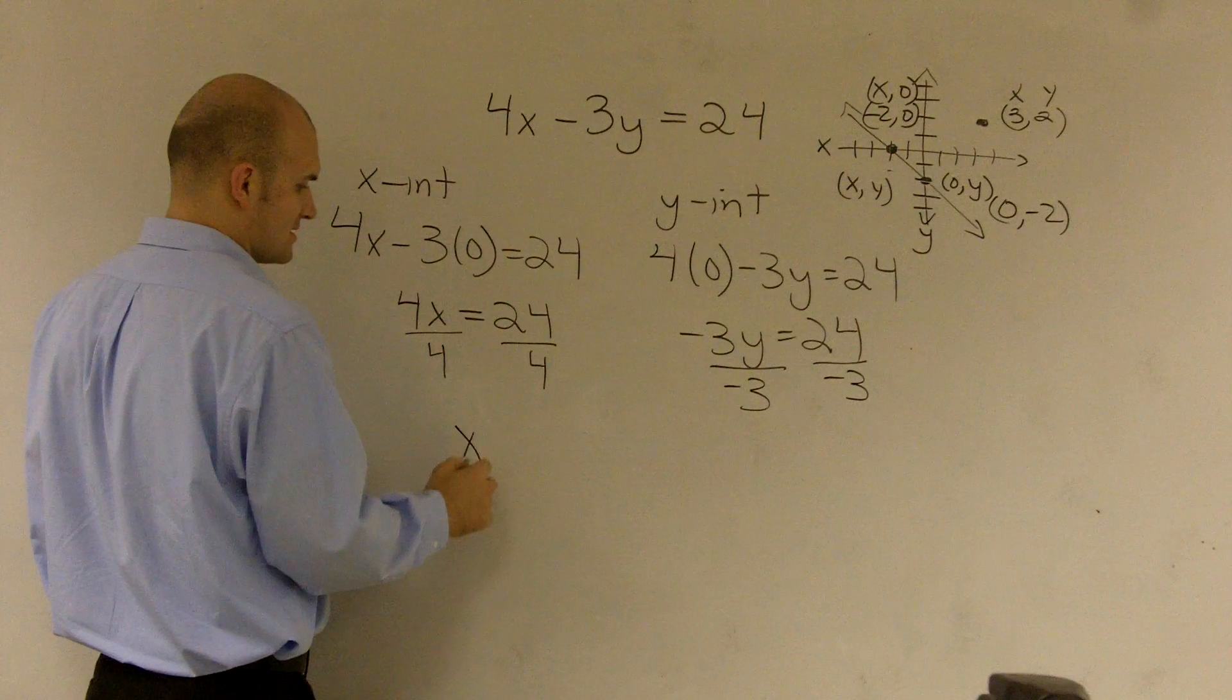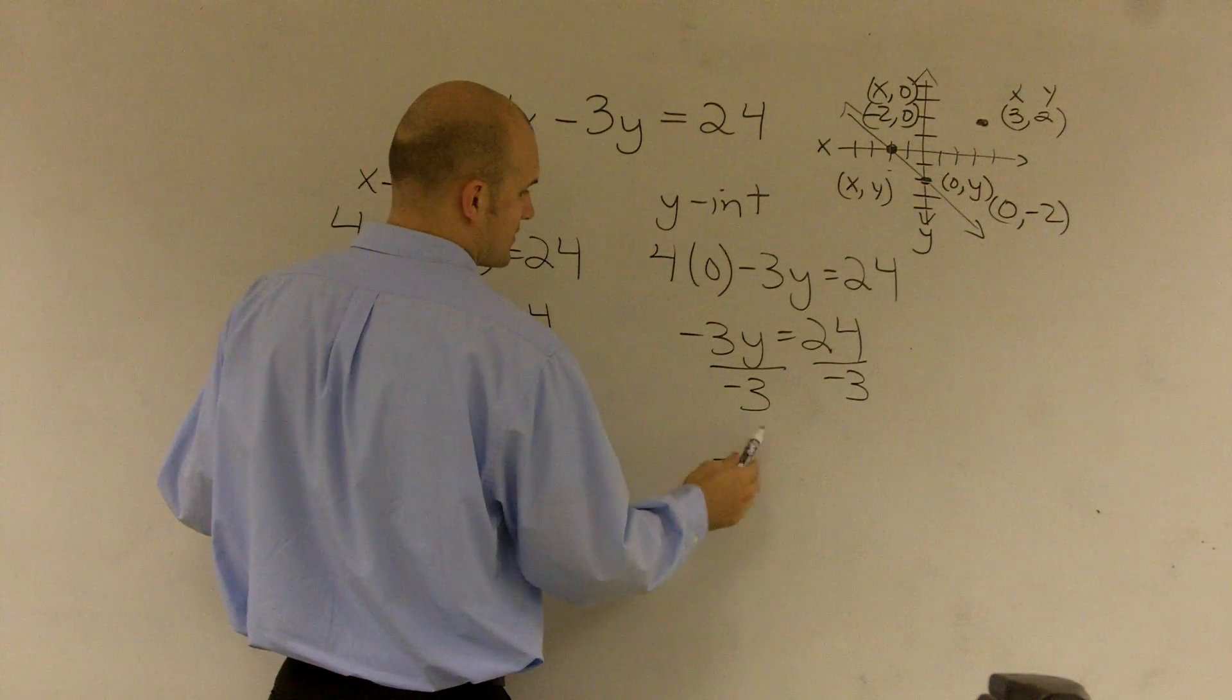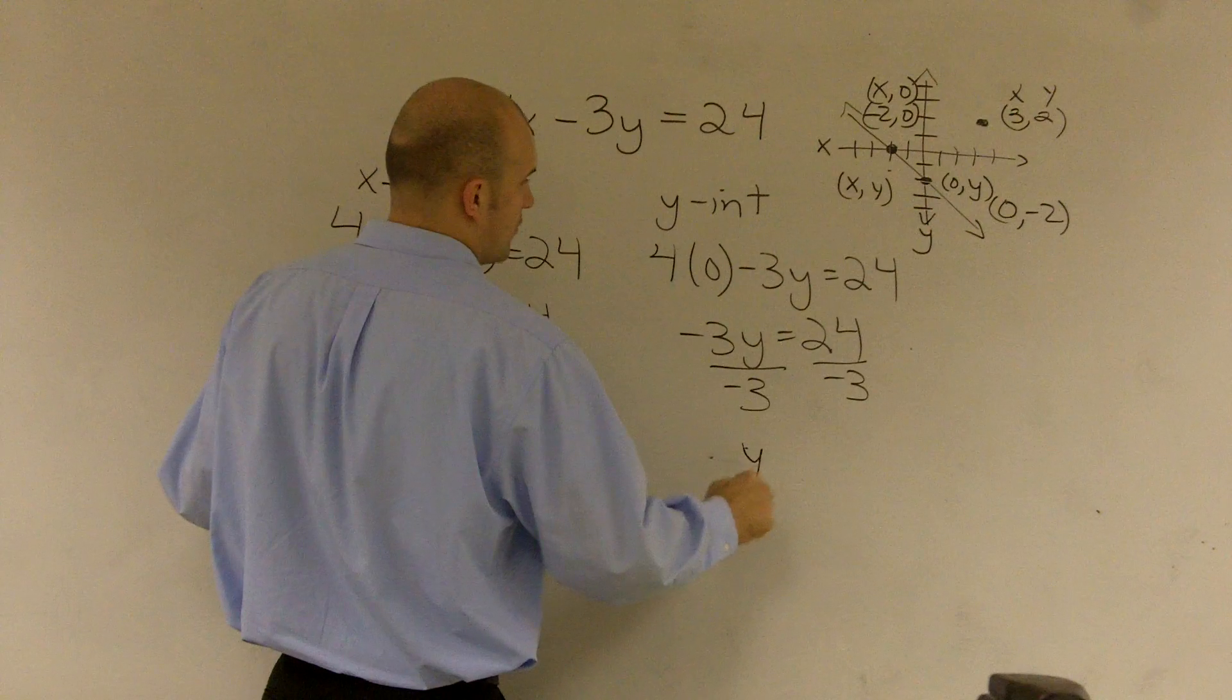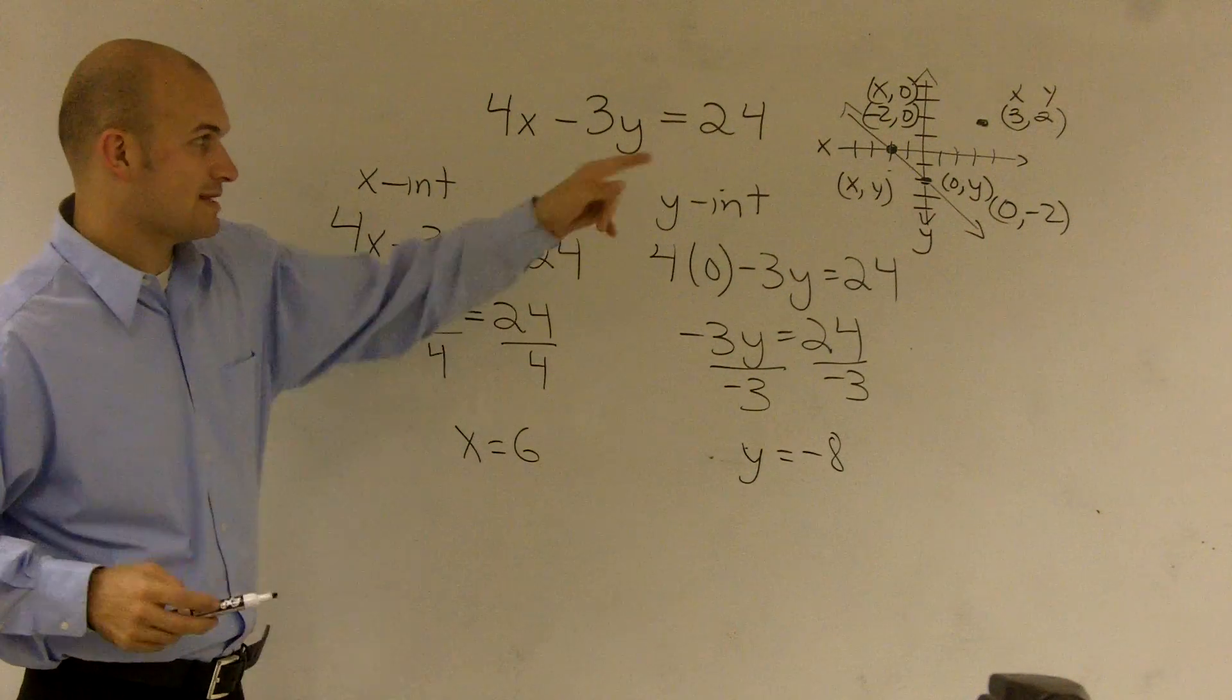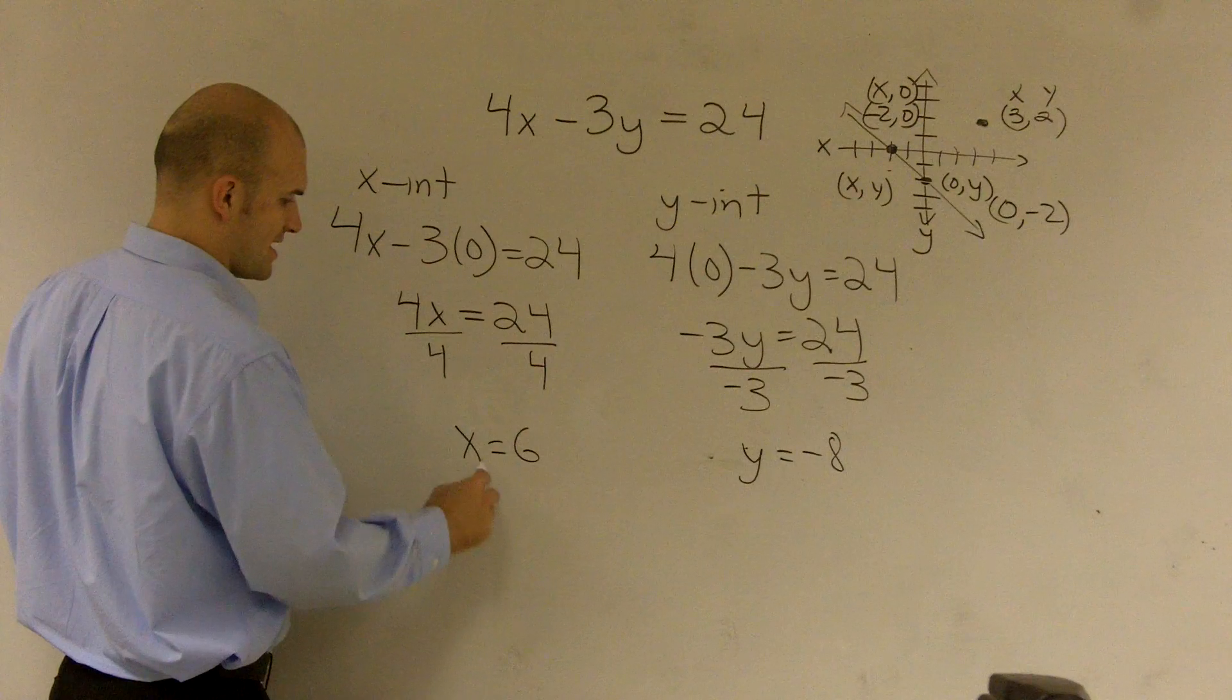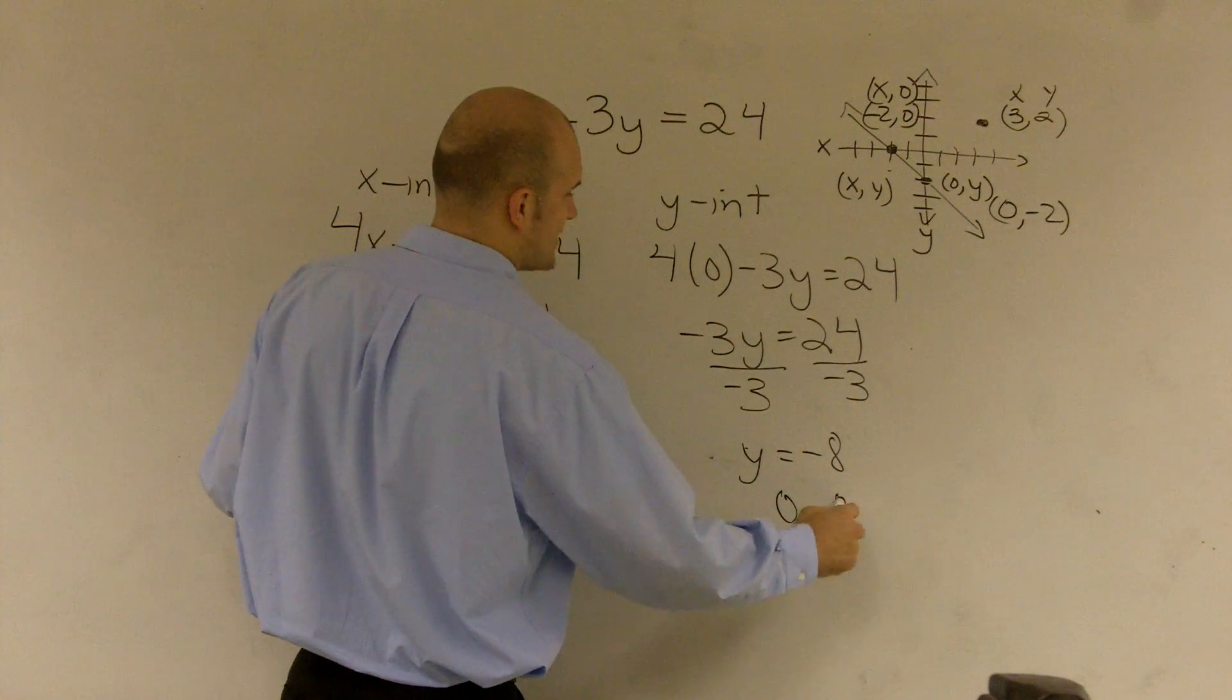Therefore, what I obtain is x equals 6. And here, y equals negative 8. Therefore, now, if I want to write them back in coordinate form, I can say x equals 6 comma 0 is the coordinate, and y is 0 comma negative 8.